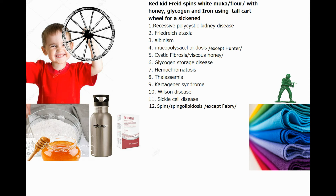So 'Red Kid' means recessive polycystic kidney disease. 'Freud' is Friedreich's ataxia. 'Spins' means mixing, so the disease for that word is Gaucher's lipidosis. 'White' is for albinism. 'Muca,' as I said before, is for mucopolysaccharidosis. And 'honey' is a very viscous thing — what's the very viscous disease? Oh yeah, that's cystic fibrosis.